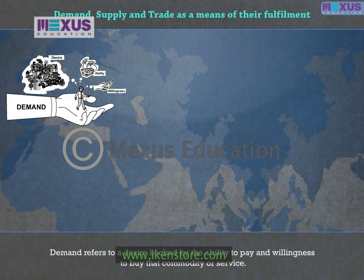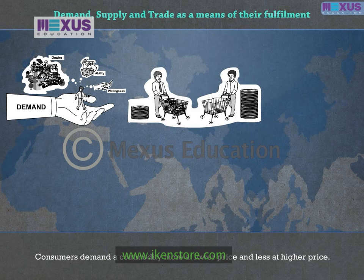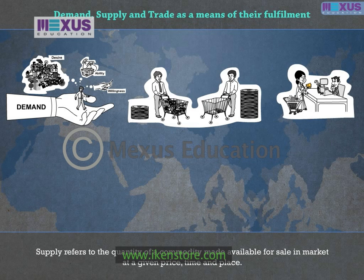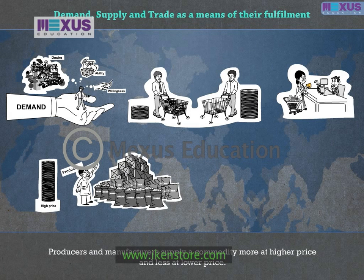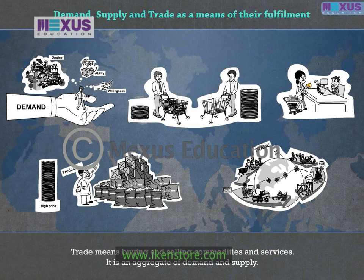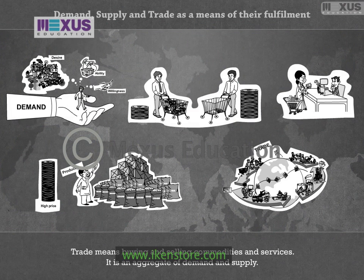In summary: demand refers to a desire backed by the ability to pay and willingness to buy a commodity or service — consumers demand more at a lower price and less at a higher price. Supply refers to the quantity of a commodity made available for sale at a given price, time, and place — producers supply more at higher prices and less at lower prices. Trade means buying and selling commodities and services, and is an aggregate of demand and supply.